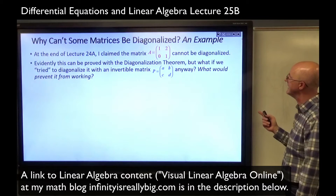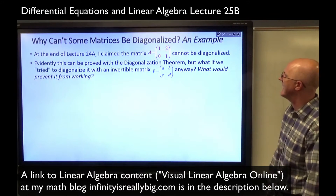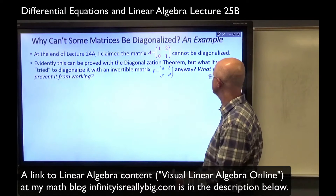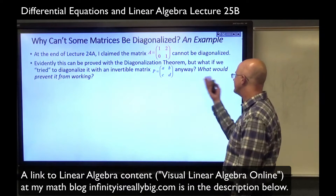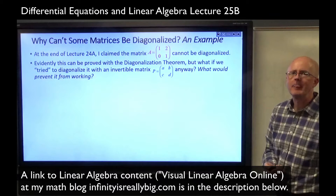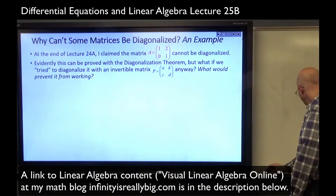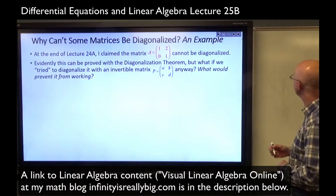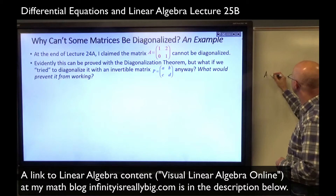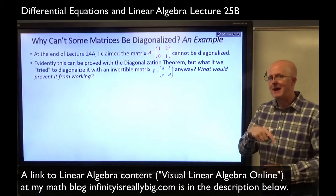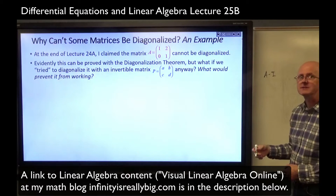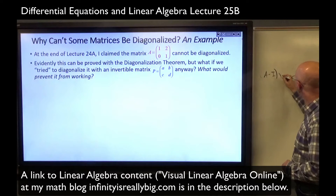But what if we tried to diagonalize it with some invertible matrix P whose entries I'm leaving unspecified — what if we tried to diagonalize it? What would prevent it from working? Why is it not diagonalizable based on the diagonalization theorem? Well, remember, its eigenvalue is one, so I need to consider A minus lambda I where lambda is one, and ask: if I consider the corresponding system of equations to solve for x in this homogeneous system, what are the solutions? Those are going to be the eigenvectors corresponding to this eigenvalue of 1.